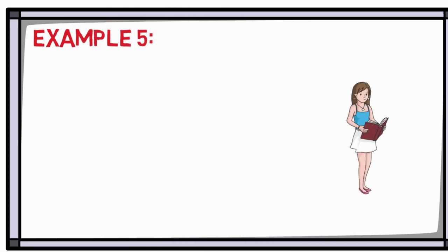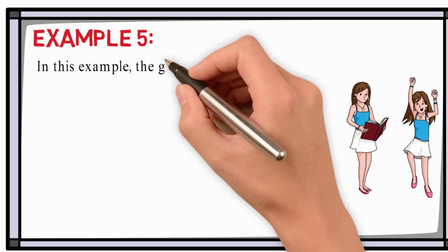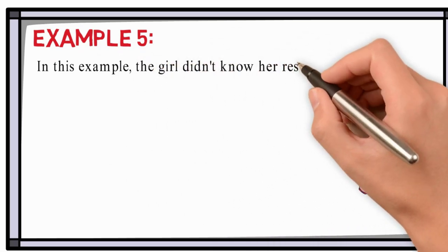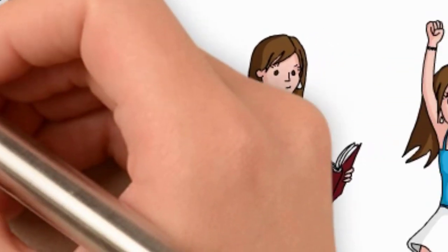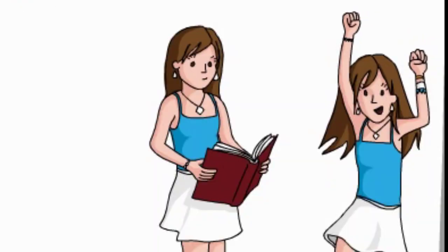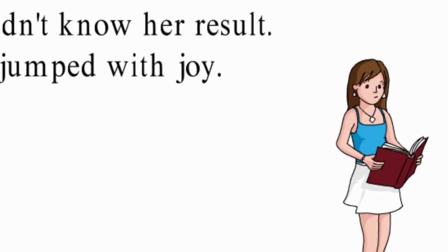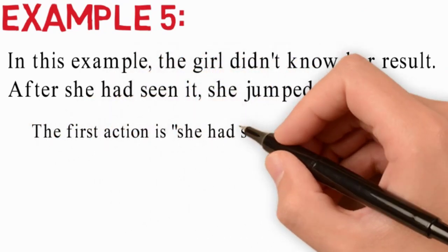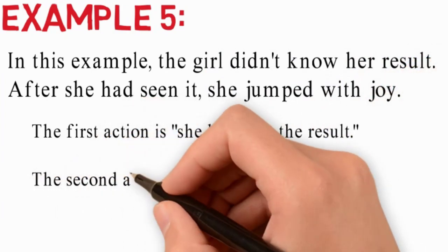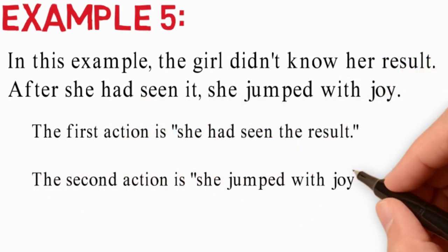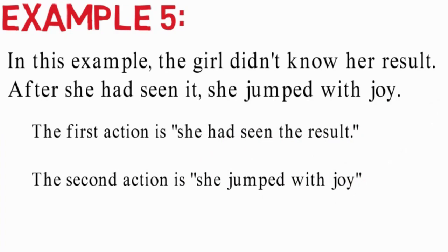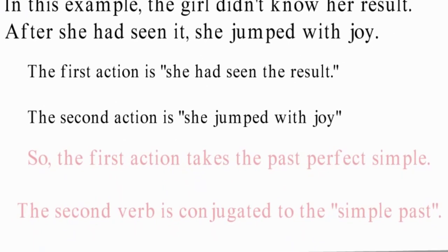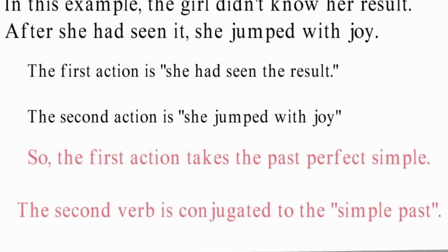In Example 5, the girl didn't know her results. After she had seen it, she jumped with joy. The first action is she had seen the result. The second action is she jumped with joy. So the first action takes the past perfect simple, and the second verb is conjugated to the simple past.